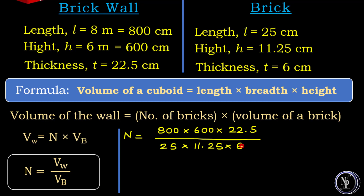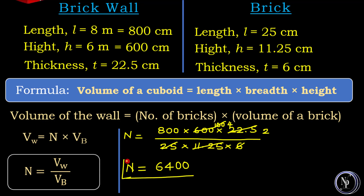Here 600 can be divided by 6, giving 100. Then 100 can be divided by 25, giving 4. And 22.5 divided by 11.25 gives 2. Now multiplying: 4 into 2 is 8, and 8 into 800 gives 6400. Therefore, the number of bricks used to construct the wall of given dimensions is equal to 6400.